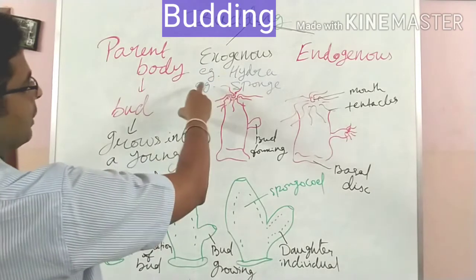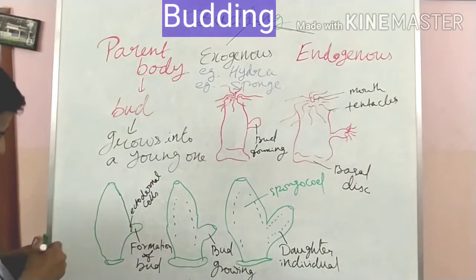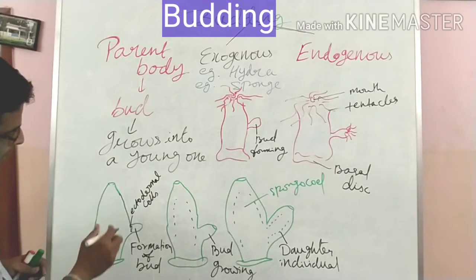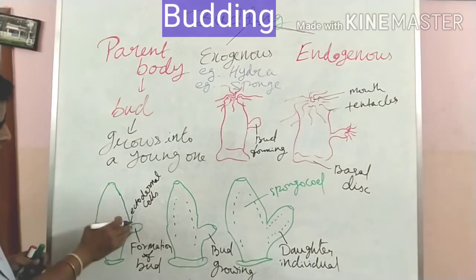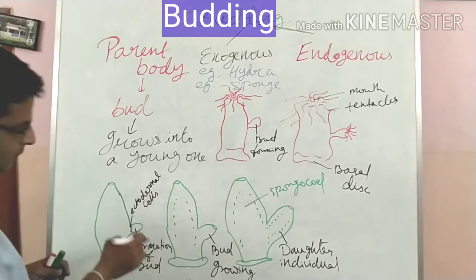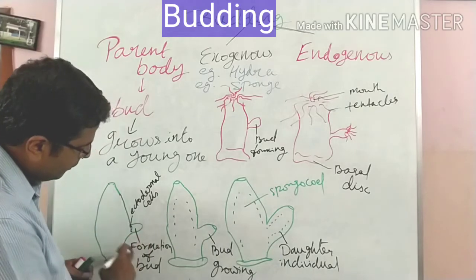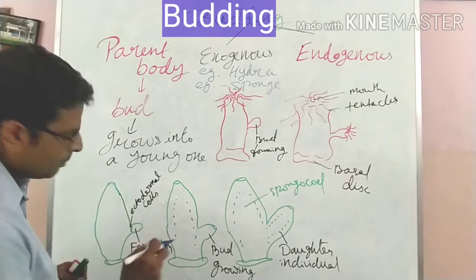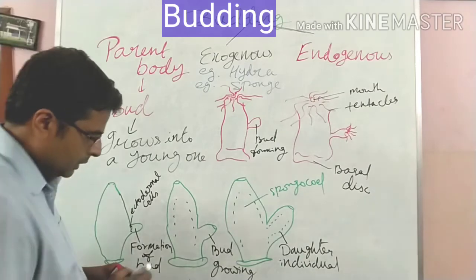Examples of exogenous budding are Hydra and sponges. In sponges, the ectodermal cells on the surface of the parent body produce a small elevation. This elevation is called a bud — that is the formation of the bud.